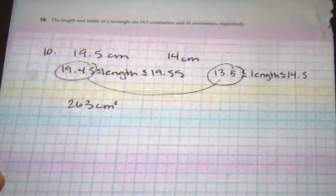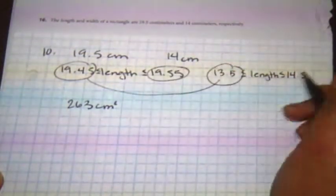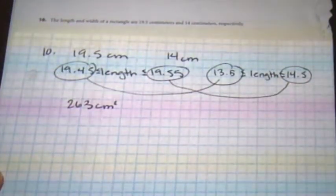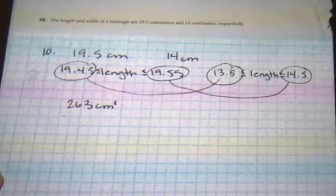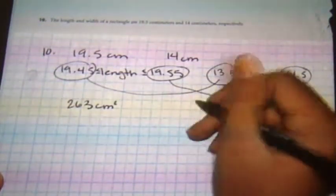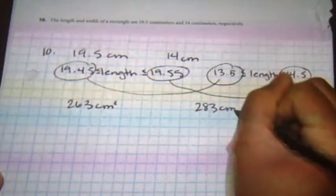And if I was to multiply my high ends together, I'd have 19.55 by width 14.5. That would give me 283 cm squared.